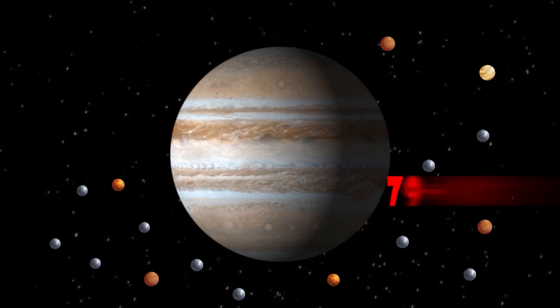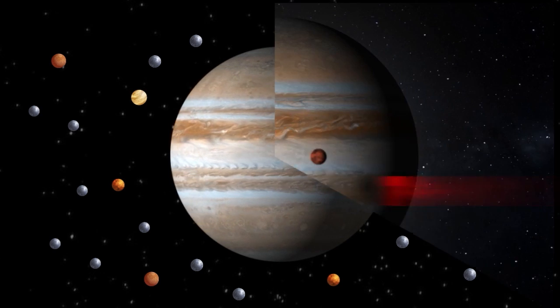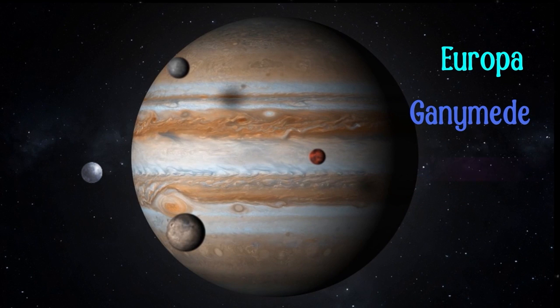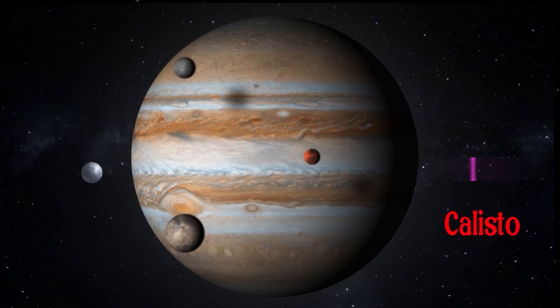Jupiter has at least 79 known moons, the most of any planet in our solar system. The four largest moons, known as the Galilean moons, are Io, Europa, Ganymede, and Callisto.